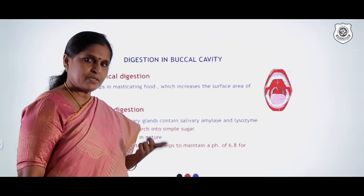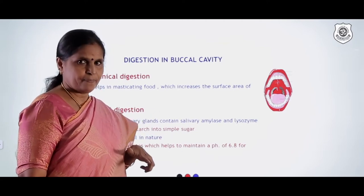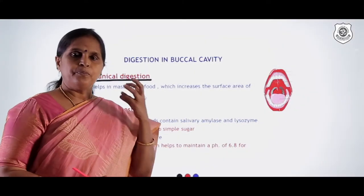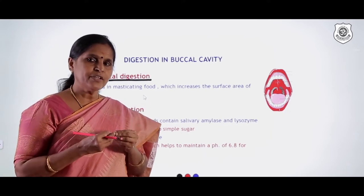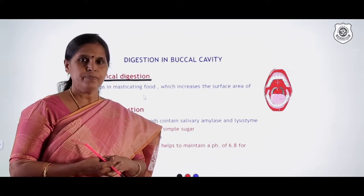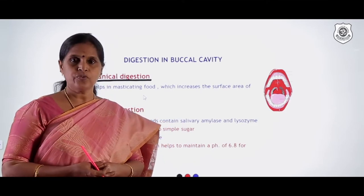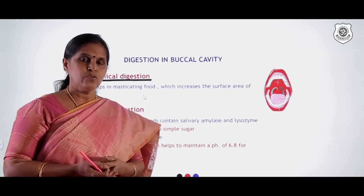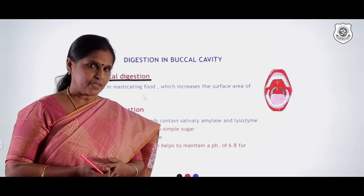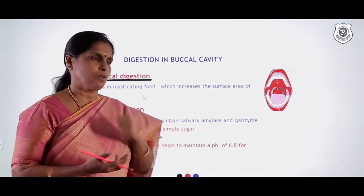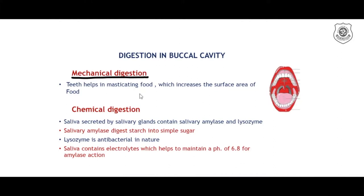In the buccal cavity you have teeth and tongue. The function of teeth is mechanical digestion — a process where particles large in size are broken into simpler particles. We call this process mastication. When a bigger particle is broken into smaller particles, a larger surface area is exposed and enzymes can act better on it. So teeth help in mastication inside the buccal cavity.